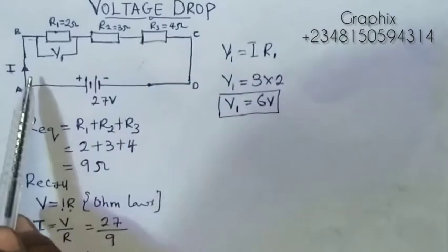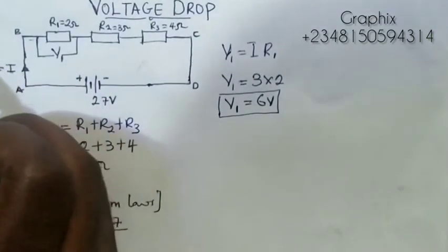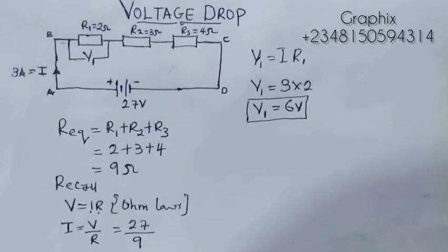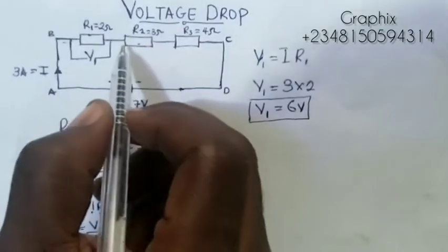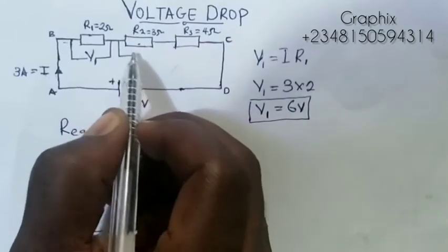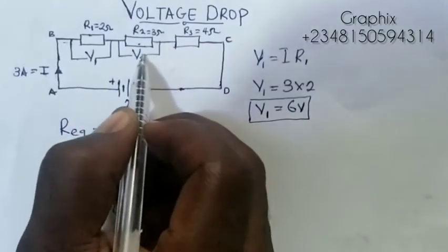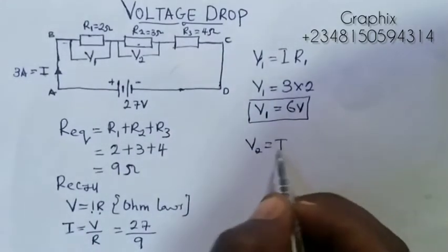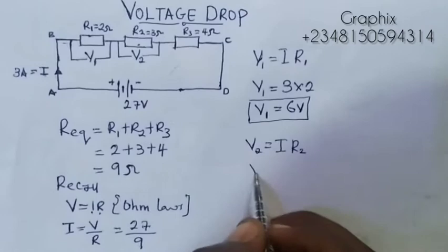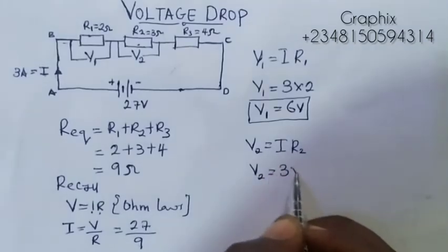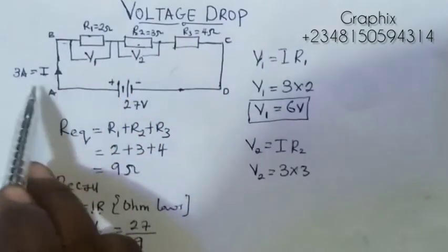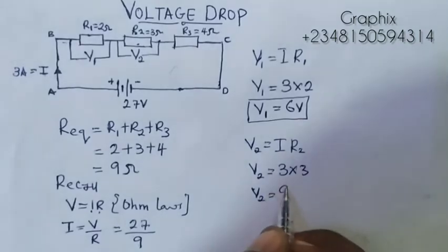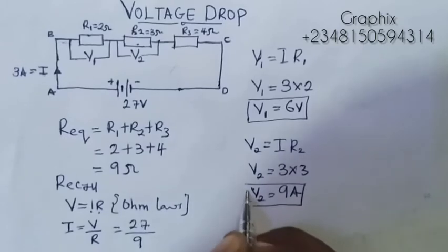Now, the same I, which equals 3 amperes that we've calculated, flows through the next resistor. The resistor will offer its resistance. So if I want to get the voltage drop, it will be V2. We say that V2 equals the I flowing through V2 multiplied by R2. And V2 will be 3 times 3, because the resistance here is 3 ohms and the current flowing through is 3. So my V2 equals 9 volts.